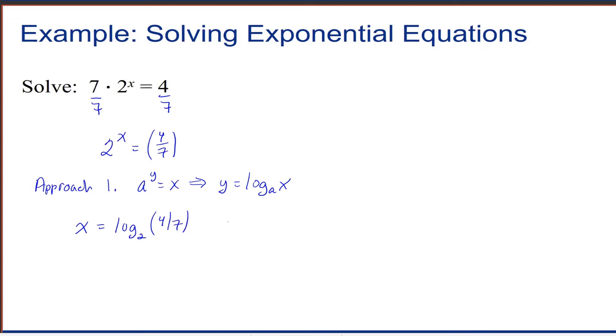If you want, you can rewrite this using the change of base formula and write this as natural log of 4/7 divided by natural log of 2. Then if you want to evaluate this and get an approximate solution, I'm getting that x is approximately negative 0.807.